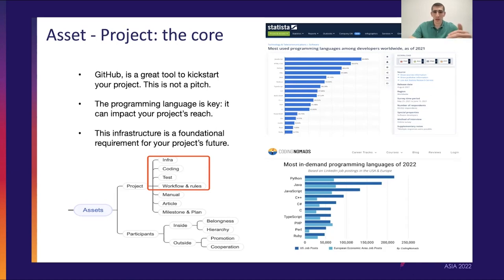One thing I would recommend is to really care about the programming language you will be using. If you start coding in a language such as Ruby or PHP, for example — I have some statistics here of the most in-demand programming languages of 2022 — you can see that Ruby, Perl, and PHP are at the bottom.